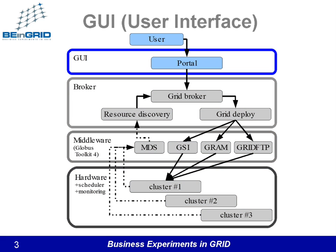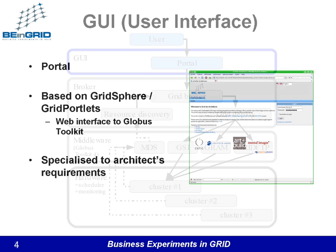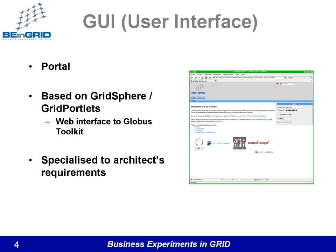Architects access the Grid4Architects service via a web portal. This portal is based on the GridSphere grid portlets web application. These open source tools allow access to the Globus toolkit middleware via a web interface. The basic GridSphere portal has been substantially adapted to the specific requirements of architects' offices.